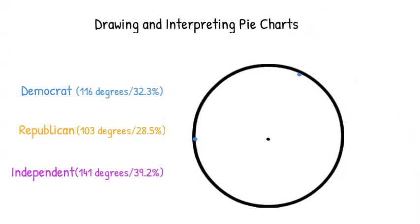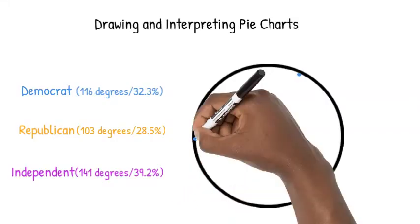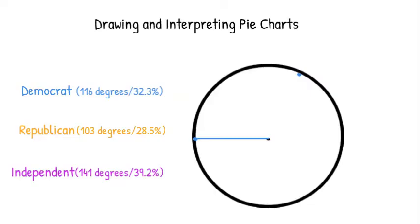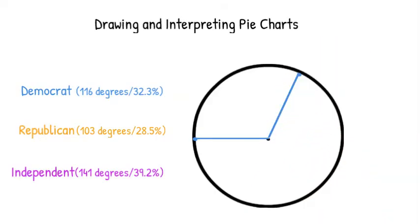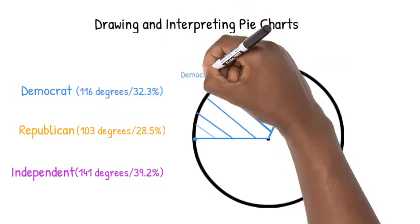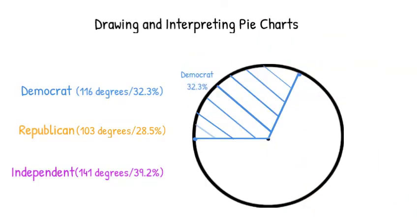Once we have those two points, we remove the protractor to make our first sector. Draw a line connecting our first point to the center of our circle and draw another line connecting the center to the other point. We shade that sector, displaying the portion of the whole that represents Democrats.